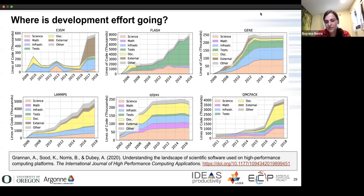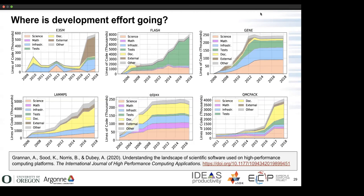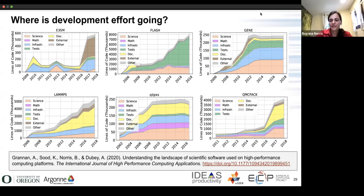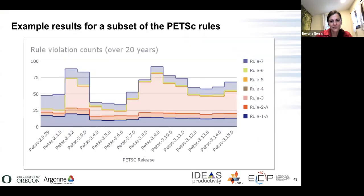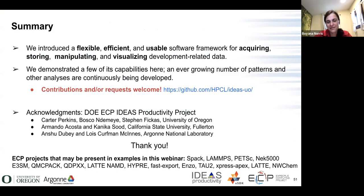You could probably also look at things like social media — the extent to which projects are interacting with people at conferences, hackathons, and things like that. If you're interested in combining this with other types of data, my group is always really happy to collaborate and do new things. The best way to interact: Googling my name is the easiest since I'm the only one. The IDEAS project work is at a GitHub website, but feel free to get in touch directly.